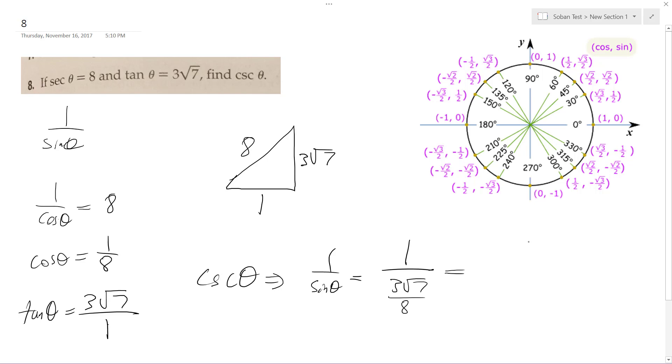So we get 8 over 3 root 7, and then multiply, rationalize the denominator. So we get the cosecant theta is equal to 8 root 7 over 21.